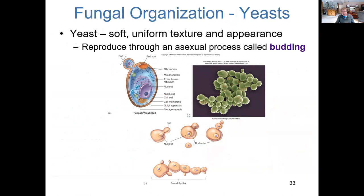Let's talk first about yeasts. When you think of yeast, you probably think of what you buy to make cinnamon rolls or bread, or perhaps a yeast infection. There are a whole lot of different kinds of yeasts, but all share similar morphology — small oval-shaped cells. Here we see a scanning electron micrograph of stained yeast cells and a cutaway sketch of a yeast cell showing all the various organelles.